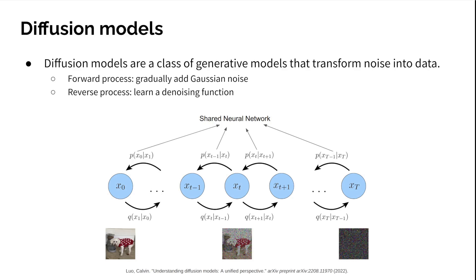Here is an overview of diffusion models. Diffusion models are a class of generative models that transform noise into data distribution. They are comprised of two steps: a forward process that gradually adds Gaussian noise to the data, and a reverse process that learns a denoiser function, which is usually a shared neural network.